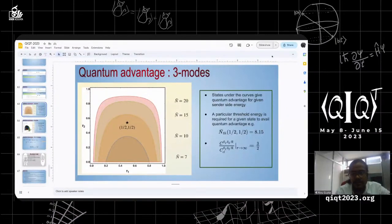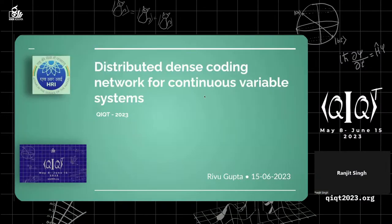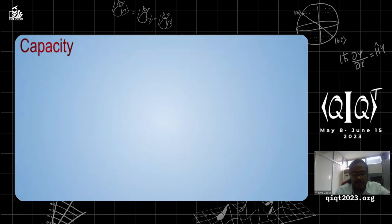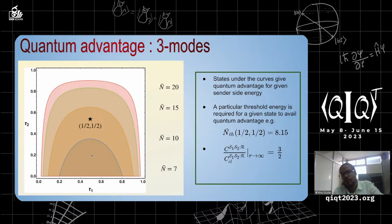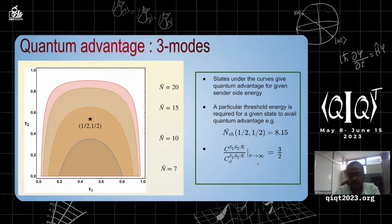Restarting with the quantum advantage for three modes: for a given sender-side energy, states under the capacity curves give quantum advantage over the classical capacity. For a given state, a threshold energy always exists — for example, a state with beam splitter transmittivities 1/2 and 1/2 requires at least 8.15 units of energy to surpass the classical threshold. In the limit of infinite squeezing, the quantum-to-classical capacity ratio is 3/2, meaning the quantum protocol gives one and a half times more capacity than the classical threshold.